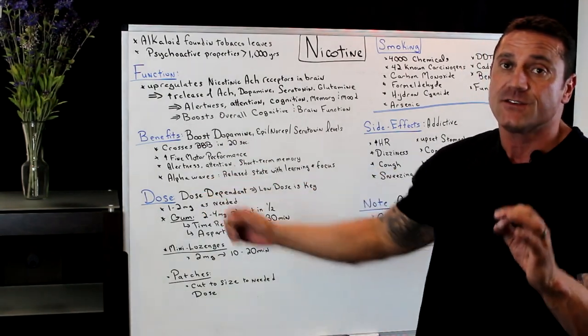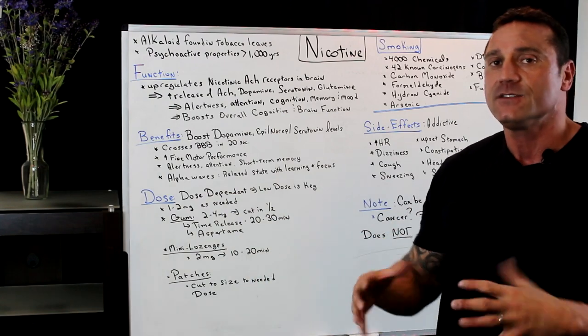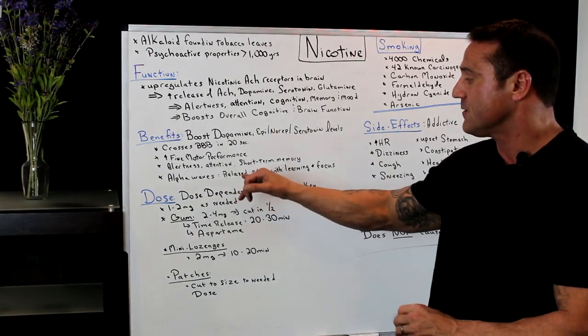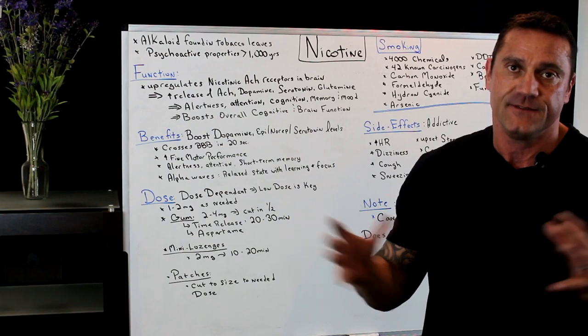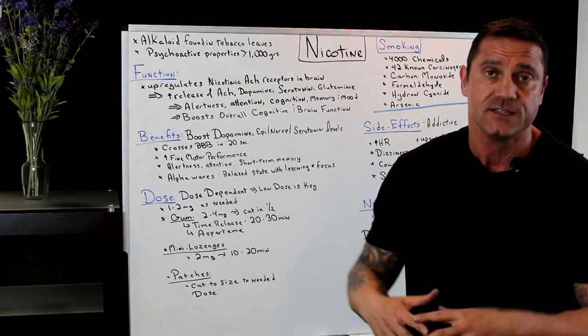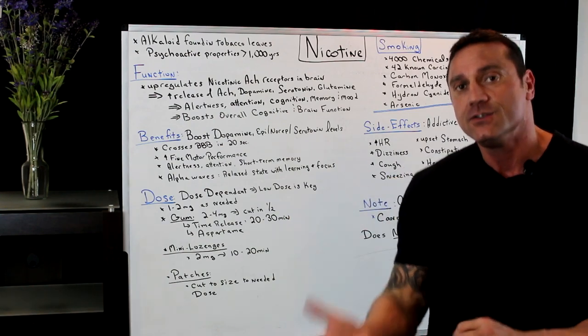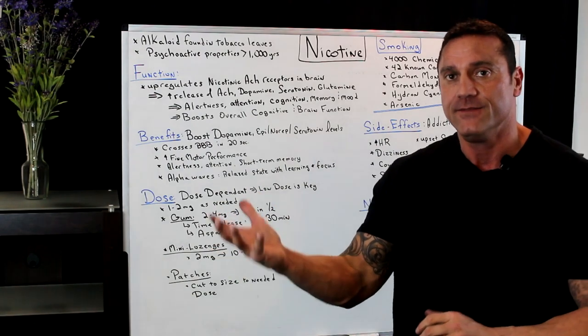And the key thing is, the reason why it calms us down, it increases what's called alpha waves. Alpha waves are used in a relaxed state with learning and focus and overall our overall state. We have different brain waves and the alpha waves, this is what you want to help calm you down to increase memory and brain function.